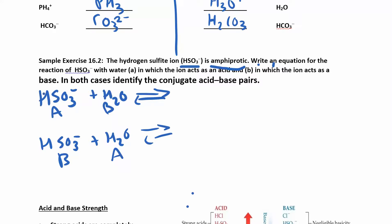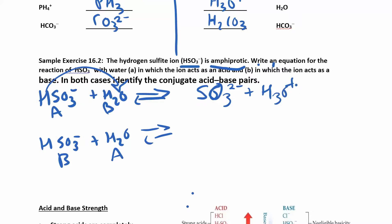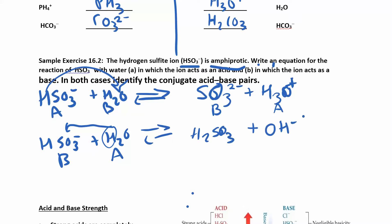Pause the video and see what happens. An acid is going to donate the proton, so on that side you end up with SO3 2 minus and hydronium, H3O plus. That makes HSO3 minus the acid and water the base, and water becomes the conjugate acid. For the second reaction, water is the acid and donates the proton to HSO3 minus, so you end up with H2SO3 on one side. Water, now missing a hydrogen, becomes OH minus. So in that reaction HSO3 minus is the base and water is the acid.